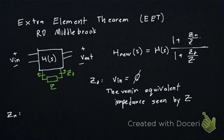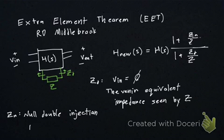Zn is a little trickier at first. It's got a rather long name. It's called the null double injection impedance. And it's the same exact thing as above, essentially. It's the impedance seen by your extra element, but it's when the output is zero, and not when the output is shorted. That's a distinction that will become more obvious and more important as we do an example.